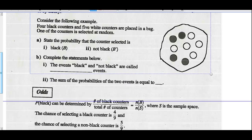Consider the following example. Four black counters and five white counters are placed in a bag as diagrammed off to the right there. One of the counters is selected at random. State the probability that the counter selected is black. Well, we can see there are four black counters out of a possible nine. How many counters are not black? Notice the notation, not black.